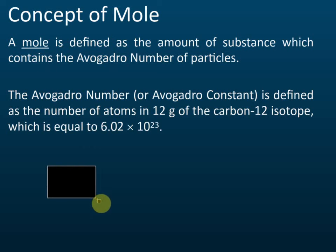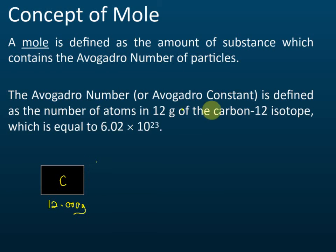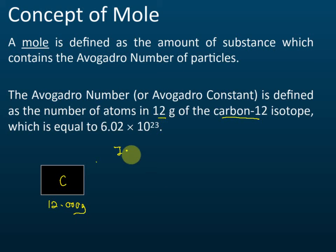First, they take a piece of carbon. The mass of these carbons is 12.000 grams. This raises a quick question: why is it carbon-12? What does carbon-12 stand for, and why is it 12 grams? In previous chapters, we have learned about isotopes.